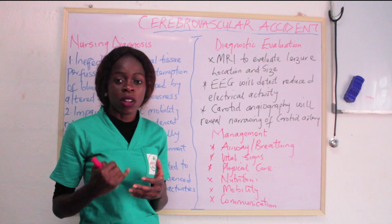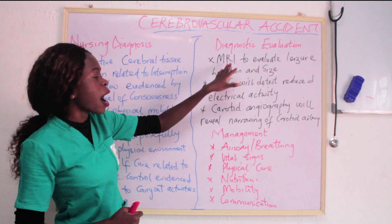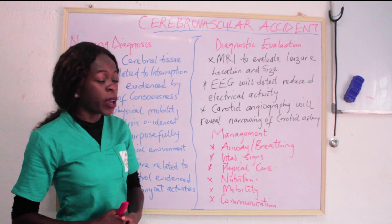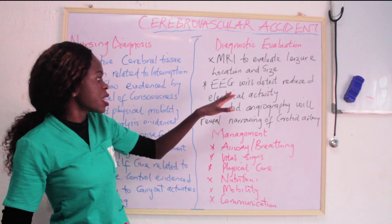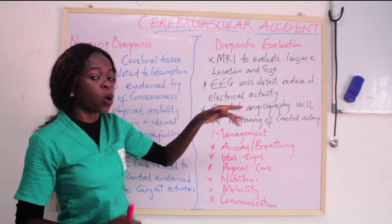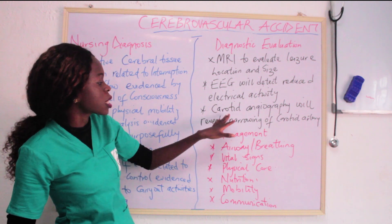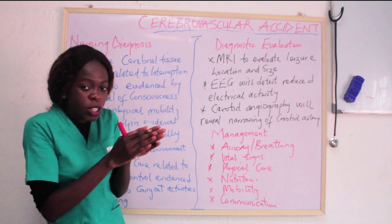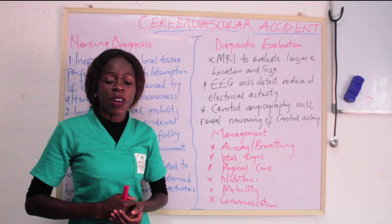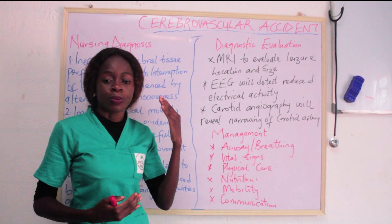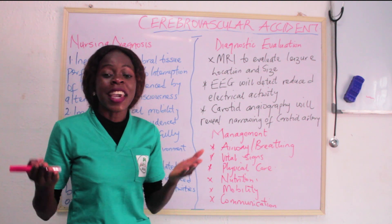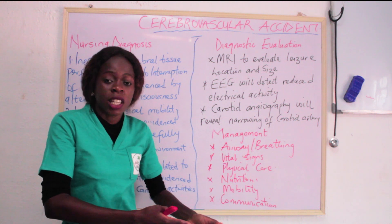For diagnostic evaluation, MRI (magnetic resonance imaging) helps evaluate lesion location and size. EEG (electroencephalography) helps detect reduced electrical activity. Carotid angiography reveals narrowing of the carotid artery. There are many other diagnostic tools available to detect stroke and cerebrovascular accidents, and physical examination along with history taking also guides the assessment of the patient.